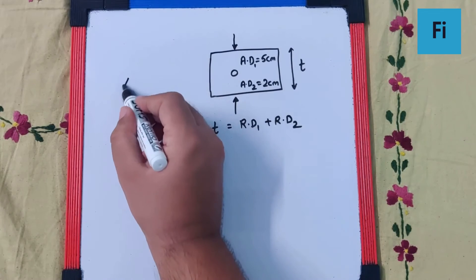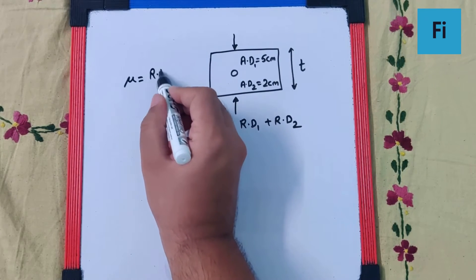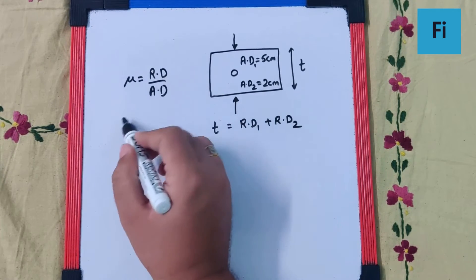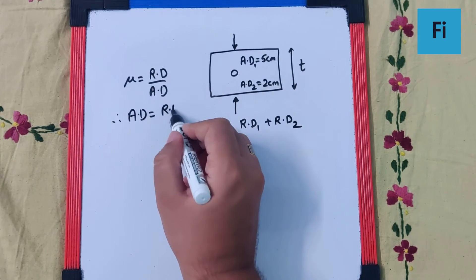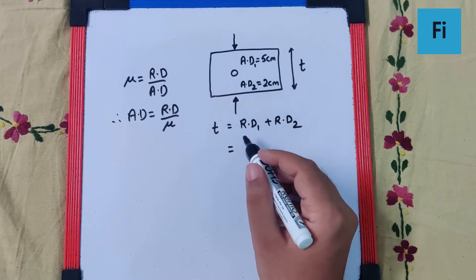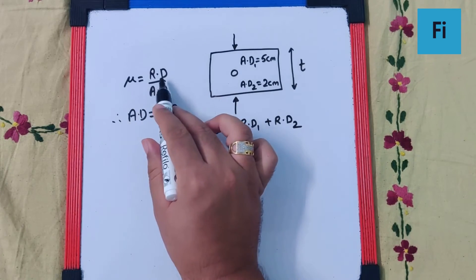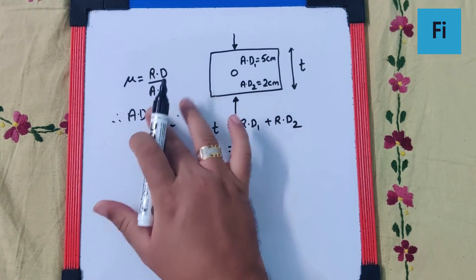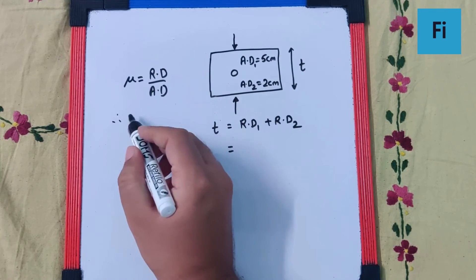Now, we know that mu is real depth upon apparent depth. This means the apparent depth is real depth upon mu, or then we can say, the real depth is mu times apparent depth. Because we have to replace the real depth.